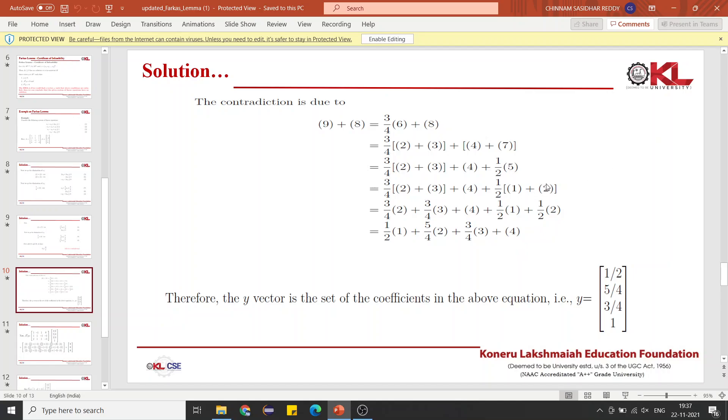Now, we have initial equations: 1, 2, 3, and 4. Bring all the 1s together, 2s together, 3s together, and 4s together. You will get 1/2 times equation 1 plus 5/4 times equation 2 plus 3/4 times equation 3 plus equation 4 gives you 9 plus 8.